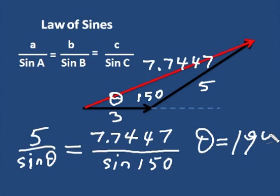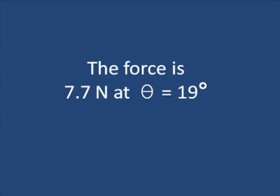Now, one mistake is to make sure your calculator is not in radians. I've seen students do a whole test and get every answer wrong because it was in radians. So the force is 7.7 newtons at θ = 19 degrees.